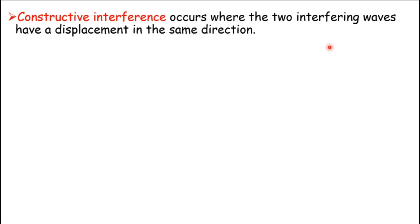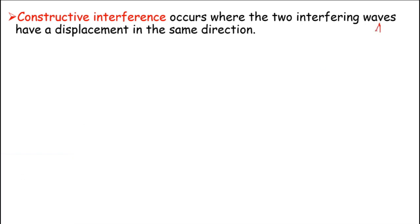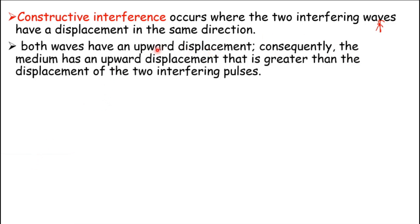Constructive interference occurs when the two interfering waves have a displacement in the same direction. The two waves must be displaced in the same direction, so they add up and the resultant equals the sum of the two individual waves — they magnify each other. When both waves have an upward displacement, the medium has an upward displacement greater than that of either of the two interfering pulses.